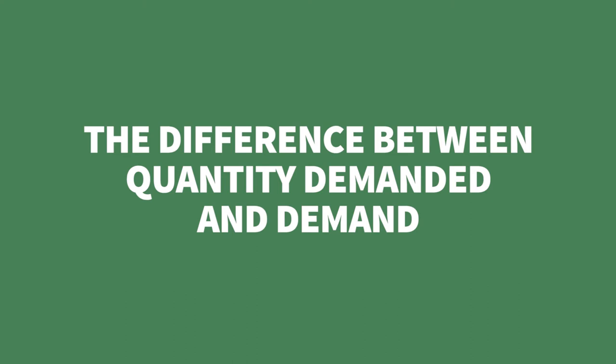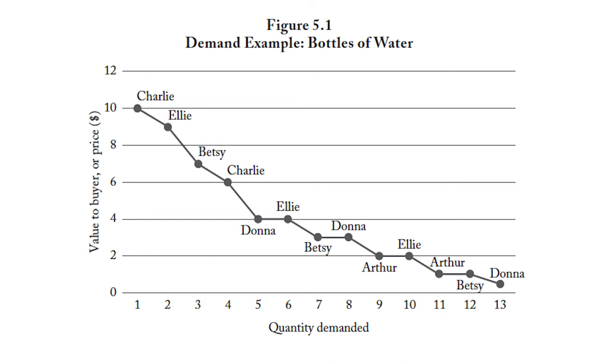Quantity demanded is meaningful at any price — at any price, we can read the quantity demanded in a market from a demand curve. Demand, however, is that whole curve, that whole line. The demand is the entire set of relationships: one bottle at $10, two bottles at $9, three bottles at $7, and so on down. That would be demand. With reference to the graph, demand is that entire curve — not a position on the curve, but the whole curve. Quantity demanded is a point that makes sense at some price, but demand is the whole curve.